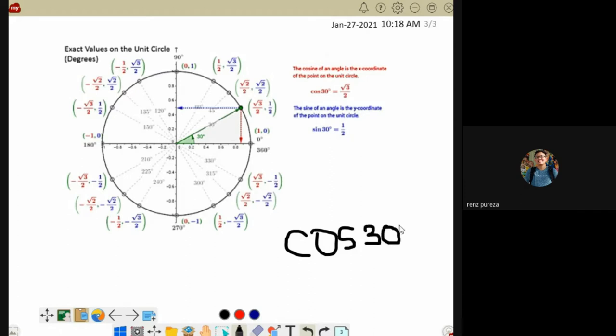For example, cosine 30 degrees. In your calculator, when you input cosine 30, there will be many answers. First, it might be in decimal - 0.8660.